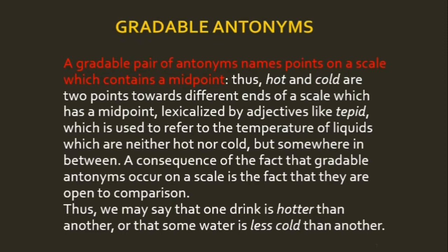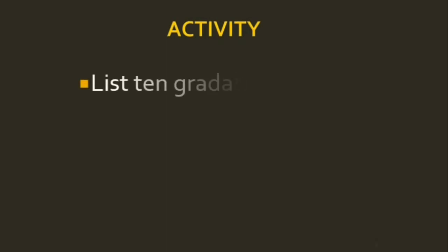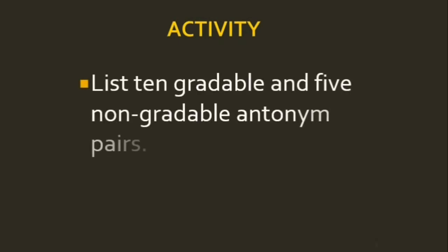Gradable antonyms can form degrees of adjectives — for example, fast, faster, fastest; slow, slower, slowest. In non-gradable antonyms we do not have a midpoint and we do not make comparative or superlative degrees. For example, live and dead — we cannot say more live or more dead because those are non-gradable antonyms.